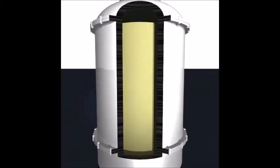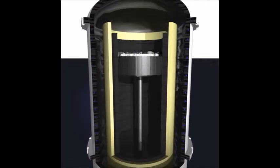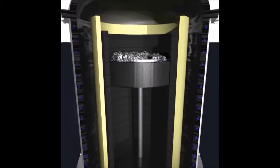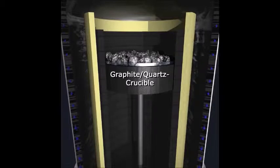Monocrystalline silicon is created through a process known as the Czochralski process, named after the Polish scientist who discovered it. Silicon with only a few parts per million impurities is melted in a quartz crucible at 1425 degrees Celsius.